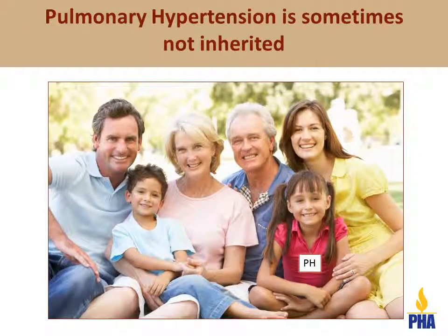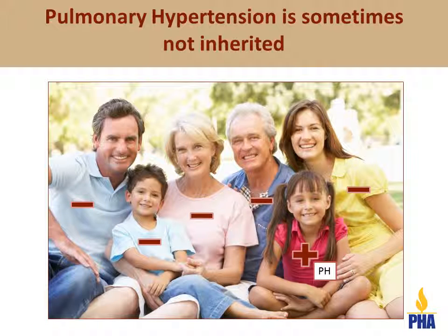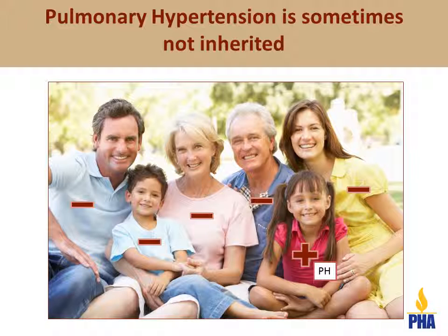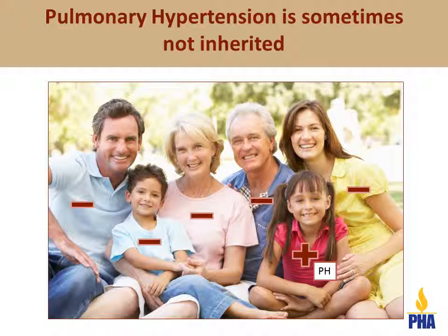In rare cases, a mutation causing pulmonary hypertension is not inherited but starts brand new in the individual. We see this most commonly when children are affected with pulmonary hypertension without any other reason for developing it. In such families, this can be extremely helpful to know because the other family members are then not at risk for pulmonary hypertension. These parents have a very small chance of having another child with pulmonary hypertension.